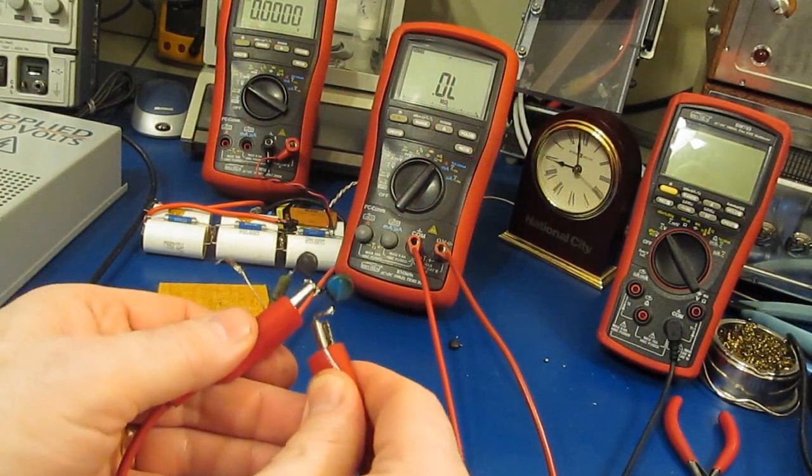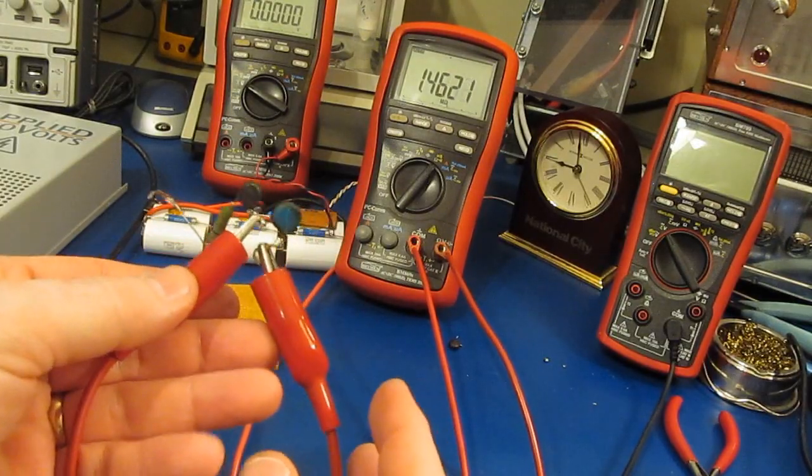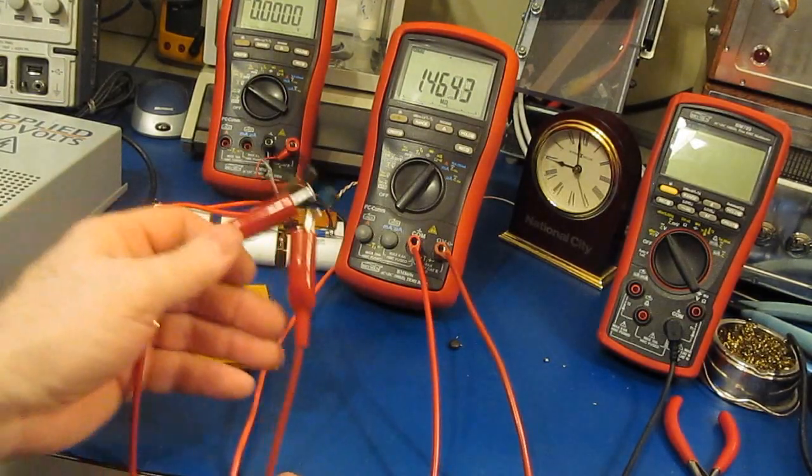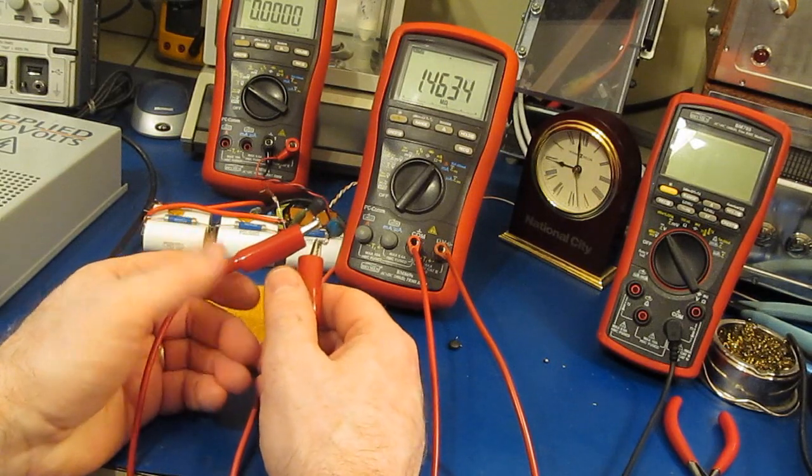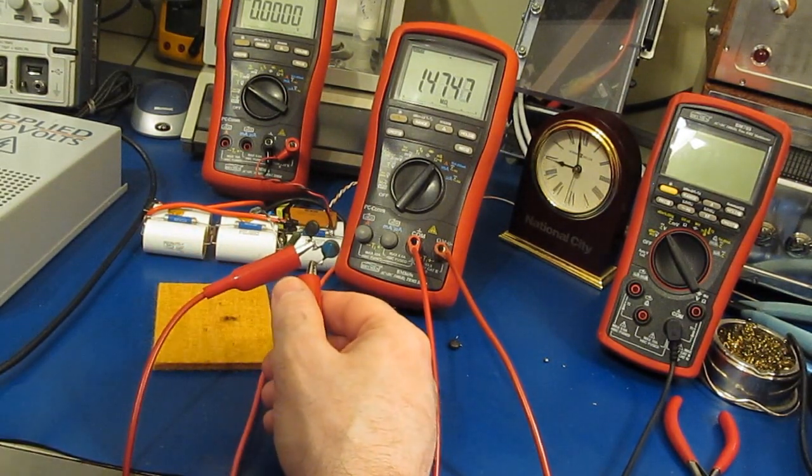Alright let's see what our MOV measures after all that punishment. So you can see it's 1.4, 1.6 meg. I'd say we've definitely damaged it.